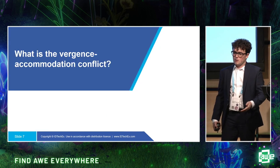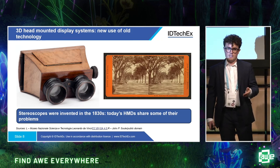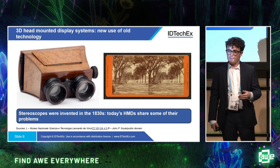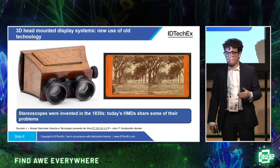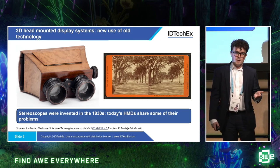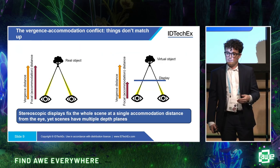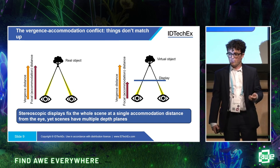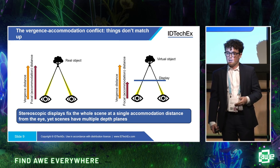So what is the vergence-accommodation conflict? In 3D display systems, an evolution of technology that's been around for over a hundred years, we have a parallax difference between images for the left and right eye, which our brains reassemble into a 3D image. But that image has a fixed focal point for each eye, which can cause problems. We have a mismatch between the vergence distance — where the eyes converge on perceived objects — and the accommodation distance, or focal distance, because the display is shown through fixed-focus optics.